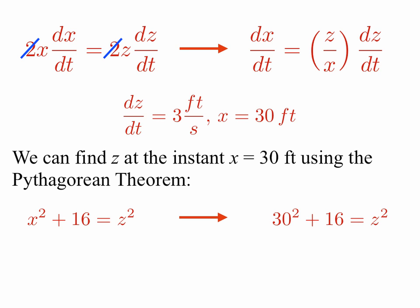So we can find z at the instant that x is equal to 30 feet using the Pythagorean theorem. So we know that x² + 16 = z². And at the instant x is equal to 30, that equation becomes 30² + 16 is equal to z². And if we use our calculator, we get z is approximately equal to 30.26 feet.